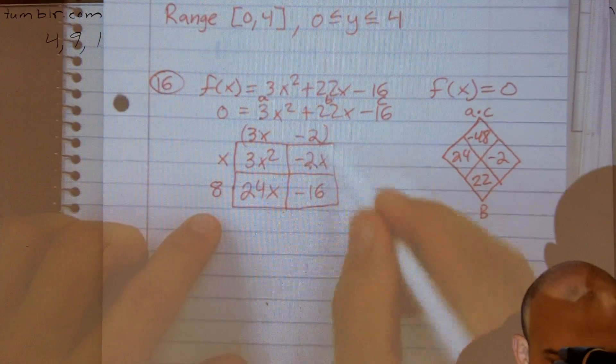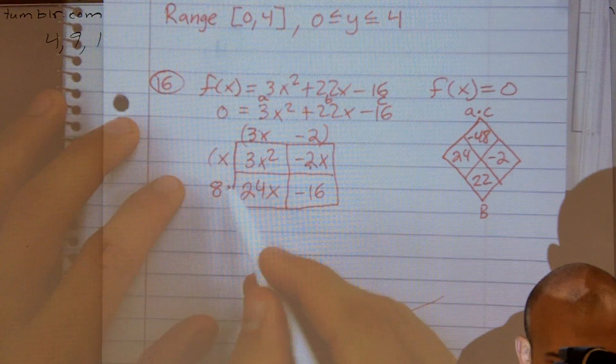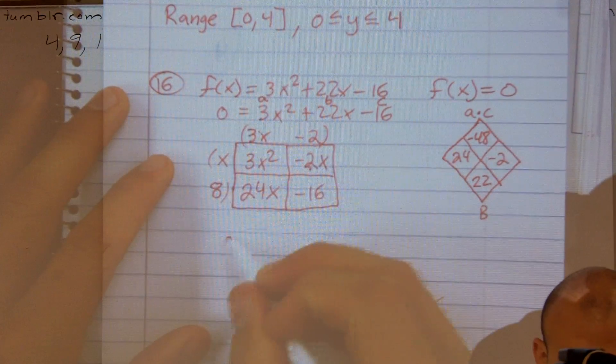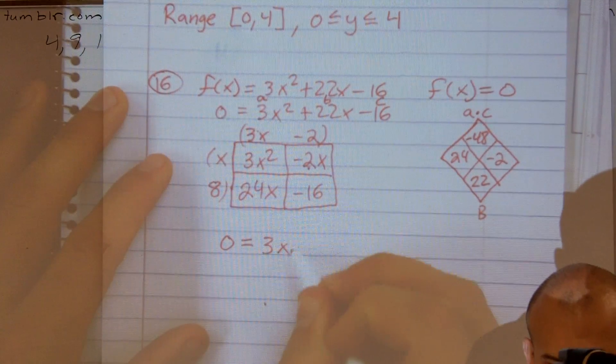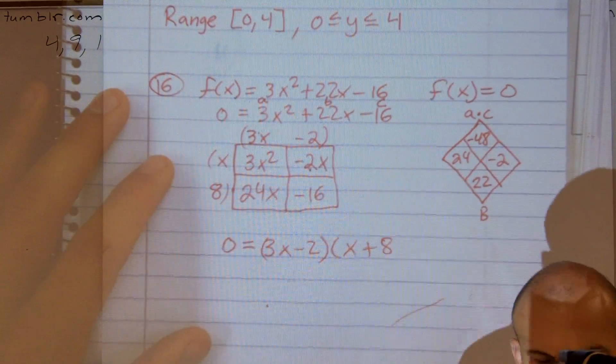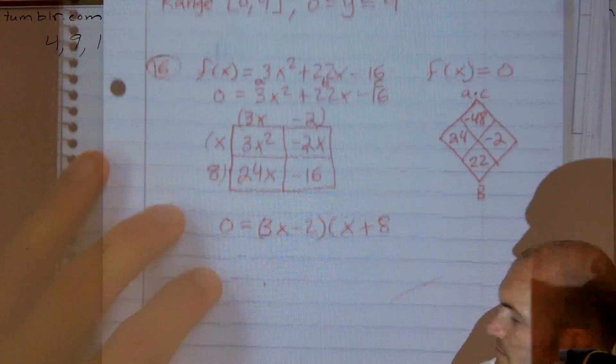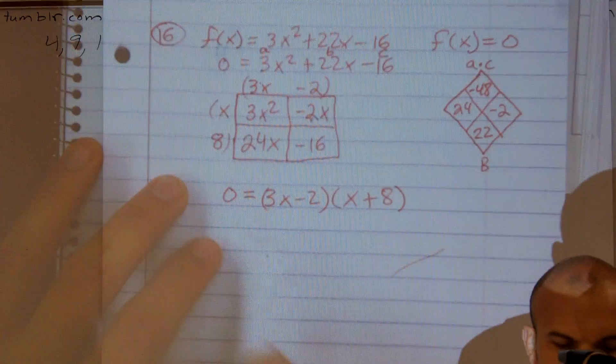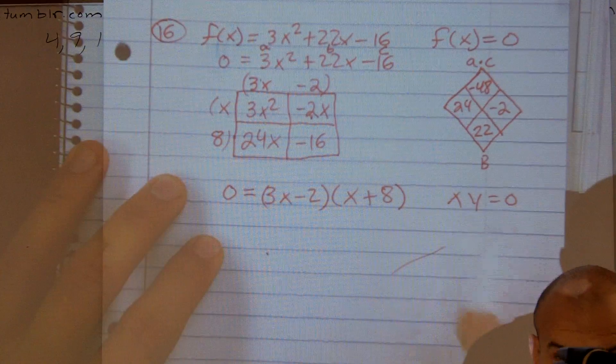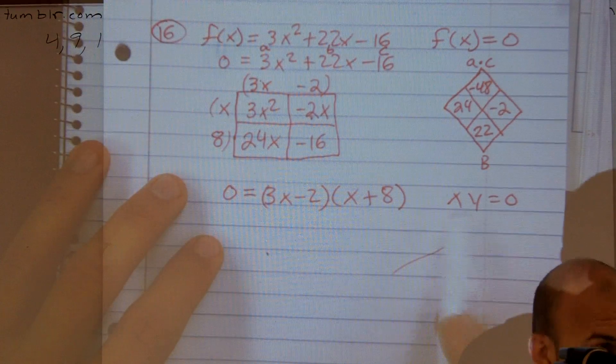Now what I've just done is created my two binomials or linear factors. So now I can say 0 equals 3x minus 2 times x plus 8. And remember when we're doing this, we're saying 0 equals one of these. I always say x times y equals 0. If x times y equals 0, one of those equals 0.